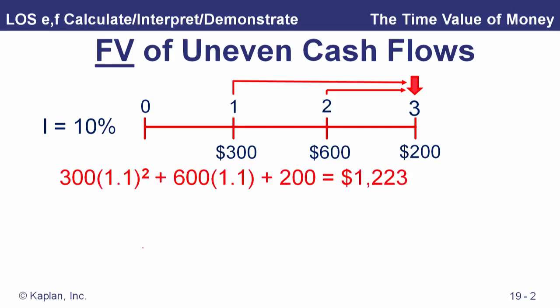That $300 spends two periods in the account up to time three, so there's our compounding factor. The $600 deposit earns interest for one year, adding another $60 in interest. And that $200 is deposited at time three, so that's the time-three value. Adding up these three future values gives us a total future value of $1,223.